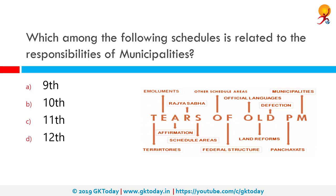Which among the following schedules is related to the responsibilities of municipalities? There are 12 schedules in the Indian constitution. Using the mnemonic 'tiers of old PM,' each letter stands for what each schedule covers. The 12th schedule, represented by M, covers municipalities. So the correct answer is the 12th schedule.